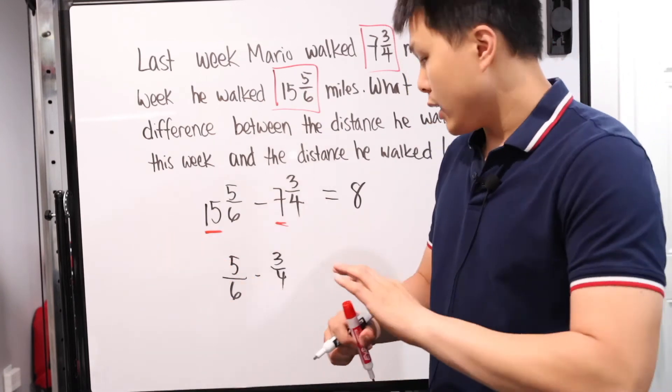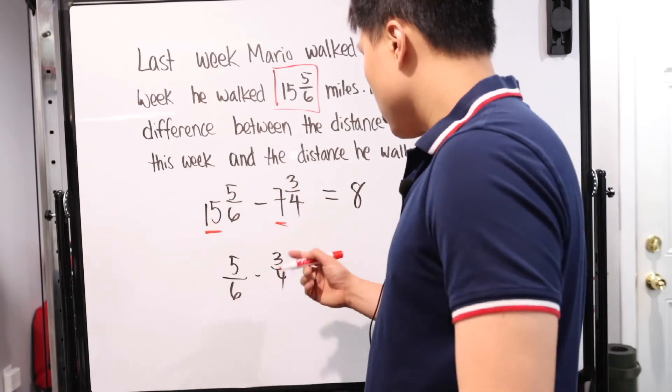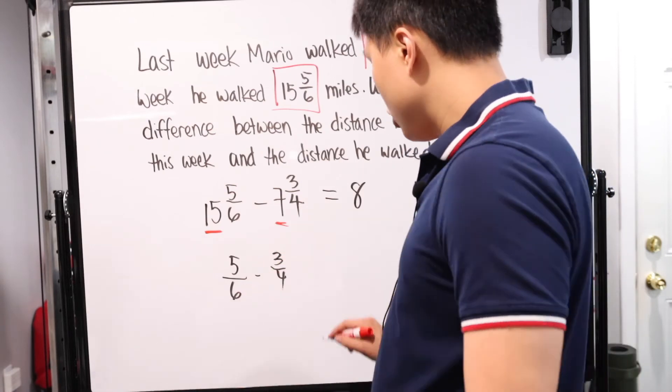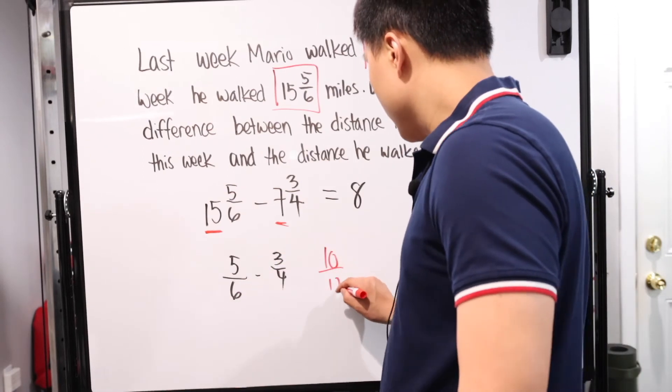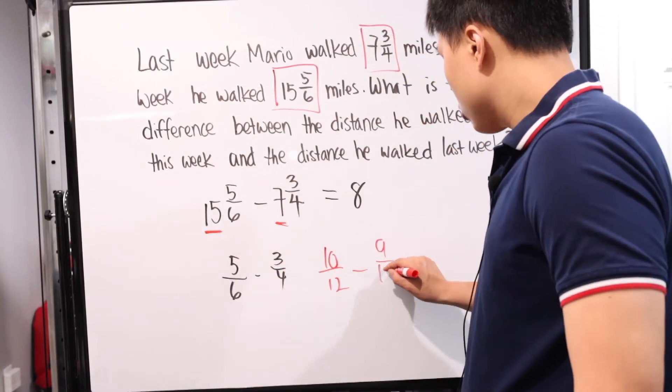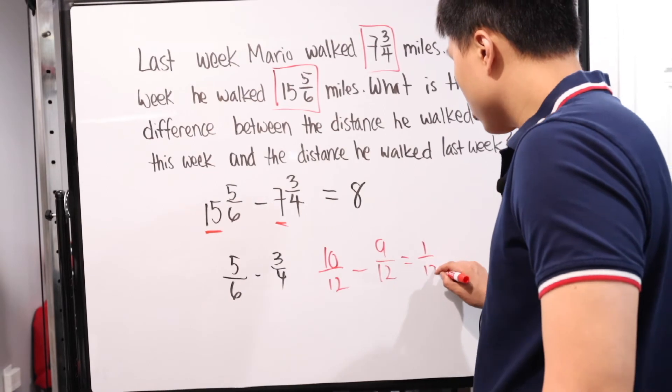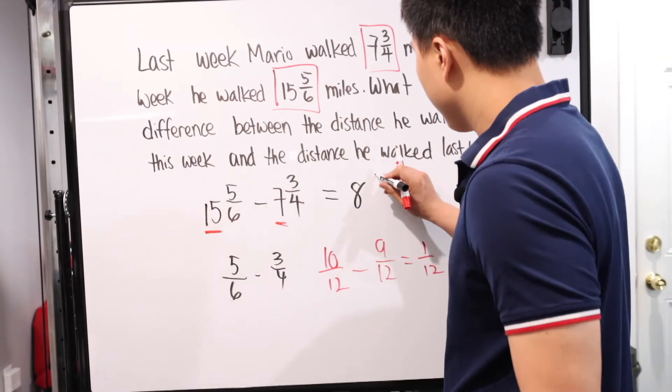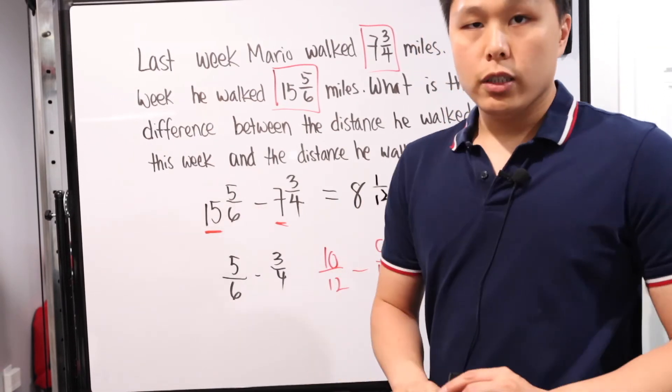If I'm looking at 5 over 6 minus 3 over 4, we can't just minus it. We have to make sure they have a common denominator. 6 and 4, luckily, that's 12. In this case, we multiply top and bottom by 2, that gives us 10 over 12. Subtract, then top and bottom by 3, that's 9 over 12, and that gives us 1 over 12. So it's going to be 8 and 1/12. Simple as that.